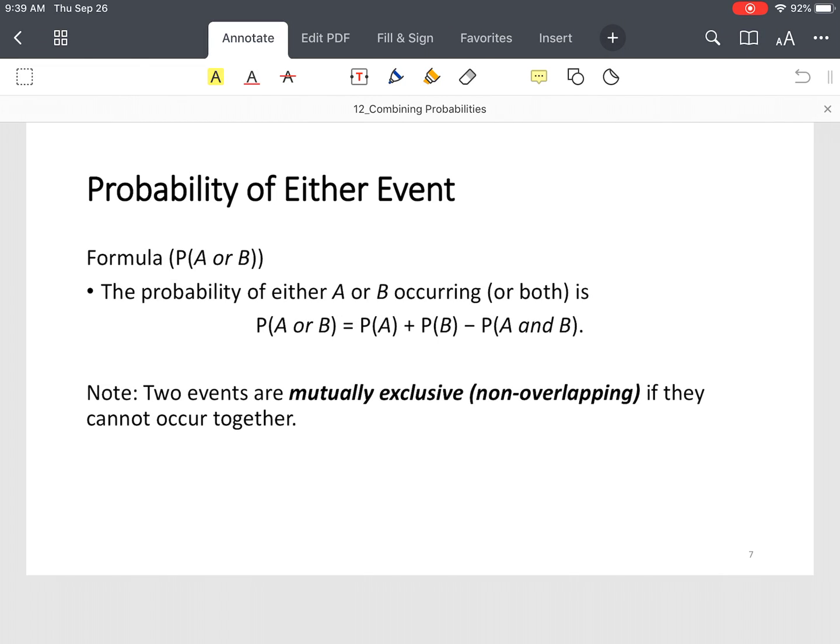All right, now we're going to introduce finding probability of either event occurring or both events occurring. So now you have either or type events.